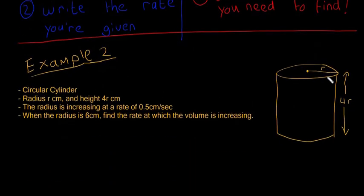In this one, our example is going to be a circular cylinder. The radius is r centimeters, and the height is four r centimeters. So the radius is r, and the height is always four times the radius. The radius is increasing at a rate of 0.5 centimeter per second. That means the height is also increasing. And when the radius is six centimeters, find the rate at which the volume is increasing. I just have a bullet point form instead of a paragraph, but that's all the information you're going to need.